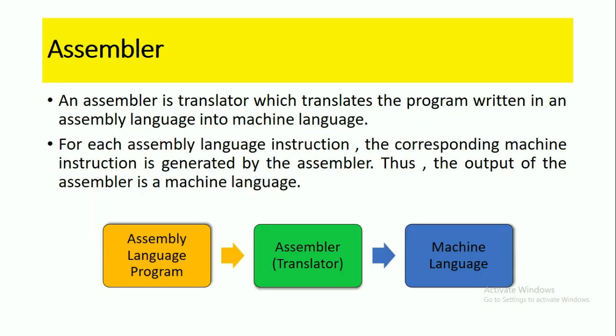The next one is the assembler. An assembler is a translator which translates a program written in assembly language into machine language. For each assembly language instruction, the corresponding machine instruction is generated by the assembler. Thus, the output of the assembler is machine language. Using this assembler, we can translate an ALP program into machine language.